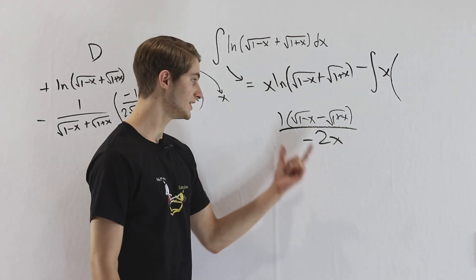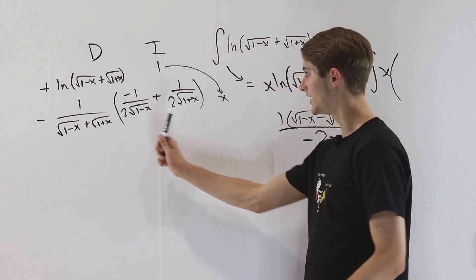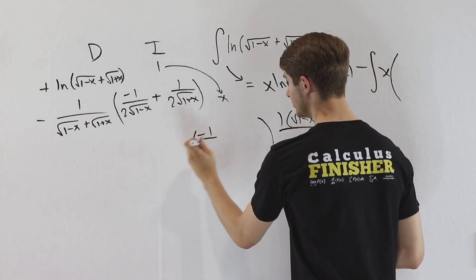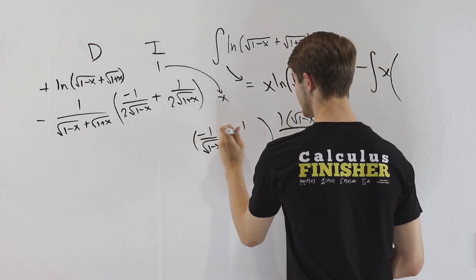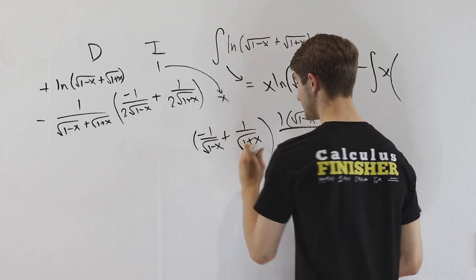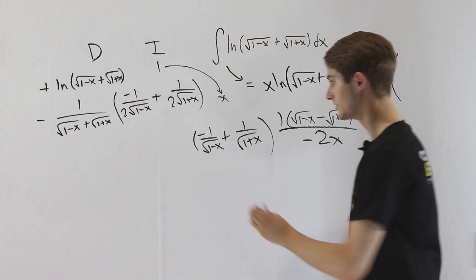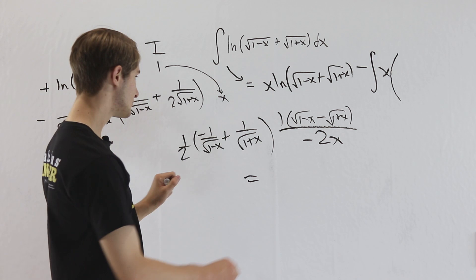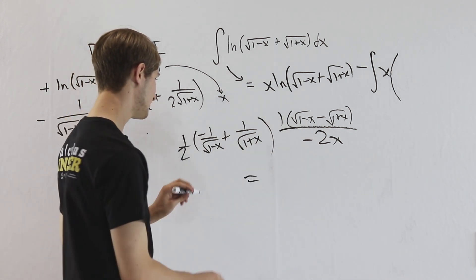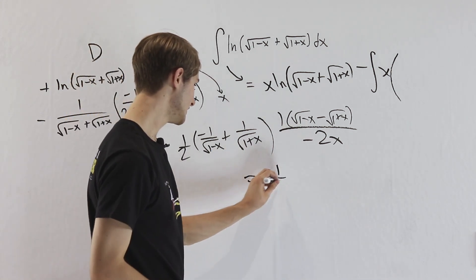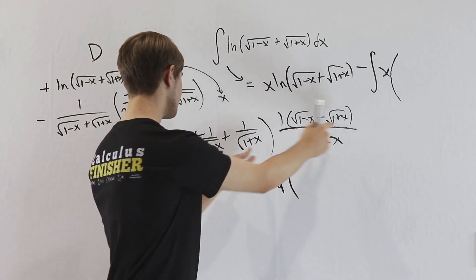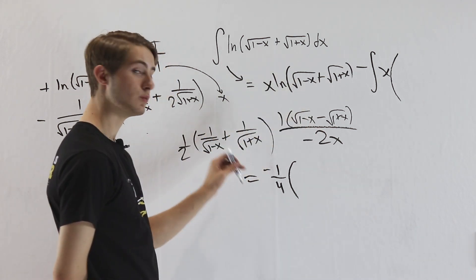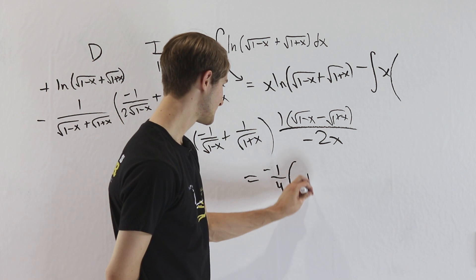Now let's multiply this result by our second factor. We multiply what we got by negative 1 over the square root of 1 minus x plus 1 over the square root of 1 plus x. We take the factor of one-half out to the front. So overall we have one-half times another one-half times a negative, giving negative one-fourth. Then we FOIL: the square root of 1 minus x times negative 1 over the square root of 1 minus x gives negative 1.